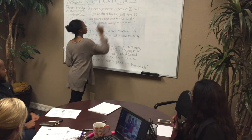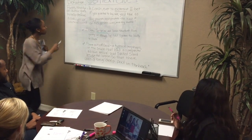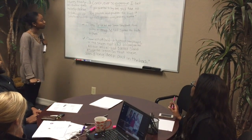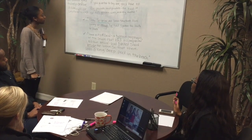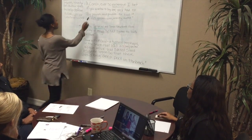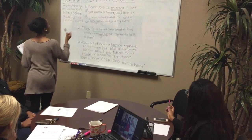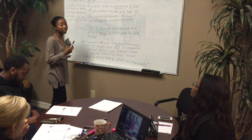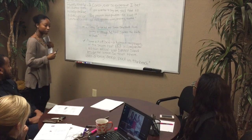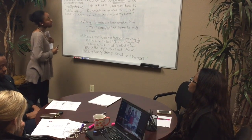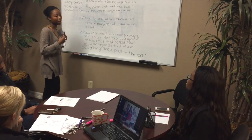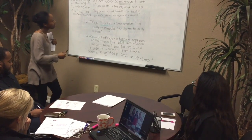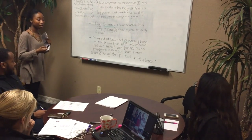So the word we don't know is 'expensive.' Jordan White, do you mind reading the first sentence for me? 'A conch, ever so expensive. I bet if you wanted to buy one, you'd have to pay pounds and pounds. He had it on his garden wall, my auntie did.' Okay, so since we've been reading Lord of the Flies, what does 'pounds' mean? Money. So what in this sentence is going to help you understand what 'expensive' means? Pay pounds and pounds. What do you think 'expensive' means, since you have to pay pounds and pounds of money? It costs a lot. Yes, 'expensive' means costs a lot of money.